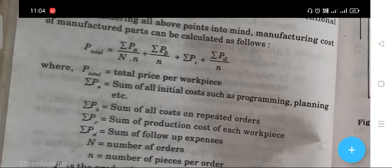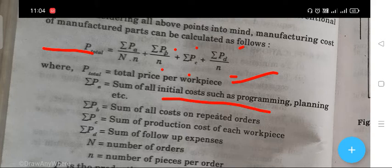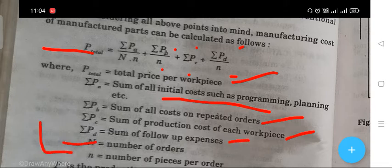Manufacturing cost of manufactured parts can be calculated as follows: P_total = ΣP_A/N + ΣP_B/n + ΣP_C + ΣP_D/n, where P_total is total price per workpiece, P_A is sum of all initial costs such as programming and planning, P_B is sum of costs on repeated orders, P_C is sum of production cost per workpiece, P_D is sum of follow-up expenses, N is number of orders, and n is number of pieces per order.